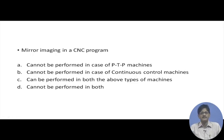Mirror imaging in a CNC program: option A (cannot be performed in point-to-point machines) and option B (cannot be performed in continuous control machines) are both wrong. Option D (cannot be performed in either) is obviously wrong since mirror imaging exists. Mirror imaging can be carried out in both point-to-point and continuous control machines. Option C is correct.